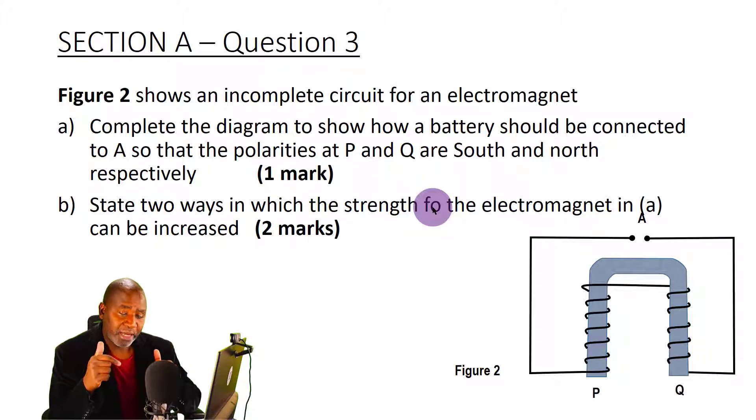Now how do we determine the polarities of the magnet? We use the right hand grip rule. If this pen is the coil, I'm going to hold the coil in my right hand. The thumb will point in the direction of the north pole, while the fingers will show the direction of the current in the coil.